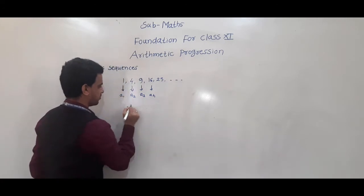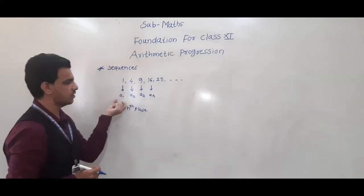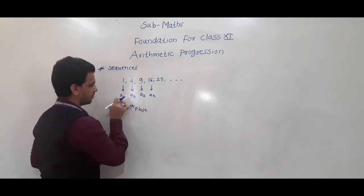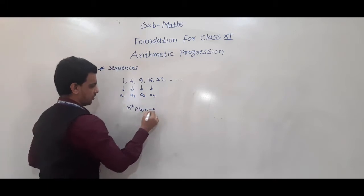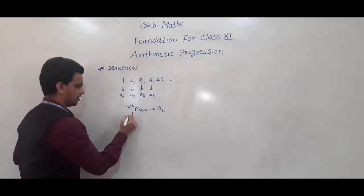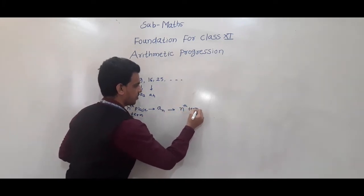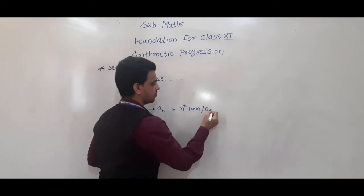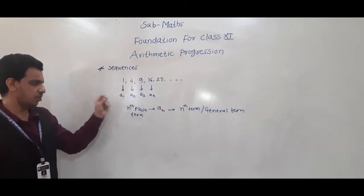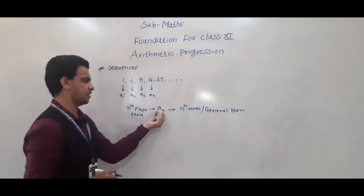If the nth place term is there, in some notations it is denoted as t1, t2, t3, t4. Similarly, nth place term here I am taking as a1, a2, a3, a4. So, nth place term is denoted as an. This is called the nth term, or in general, we call it the general term. So, this nth term is called as the general term and we denote it as an.